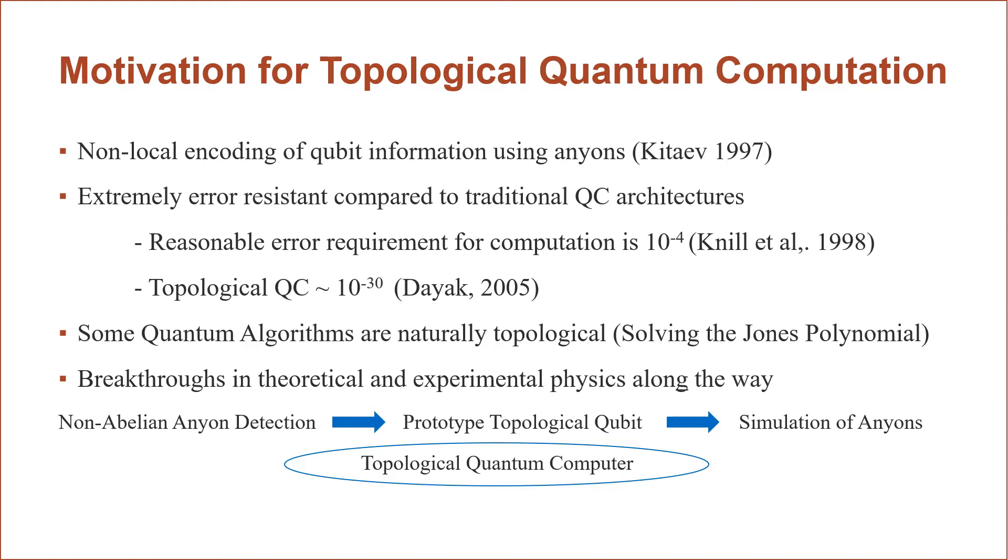Another reason to use such a system is that some algorithms are topological in nature and thus suited to topological quantum computation, such as solving the Jones polynomial. Also, the breakthroughs in theoretical and experimental physics along the way will be vastly worth it in terms of our discoveries of new phases of matter and things of that nature.